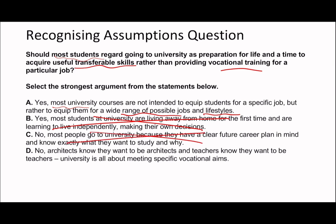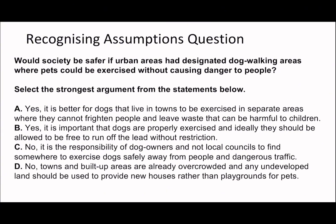Option D says architects know they want to be architects and teachers know they want to be teachers — university is all about meeting specific vocational aims. I would completely rule that out because it narrows the argument to architects and teachers and claims university is about specific vocational aims, which isn't true for most people. So A is probably the one that makes the most sense. Sometimes it's not clearly obvious which answer is correct until you rule out the others.